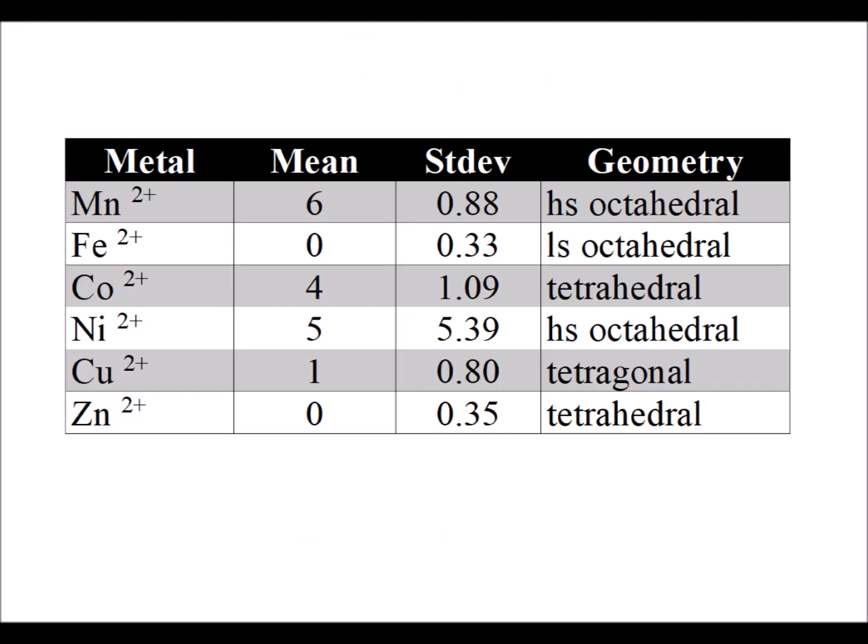And then to sum up we have a chart here. And in the second column the mean we're listing the average number of unpaired electrons. And then followed by the standard deviation. And then to the far right we have our conclusion as to the geometry of the divalent metal ion.